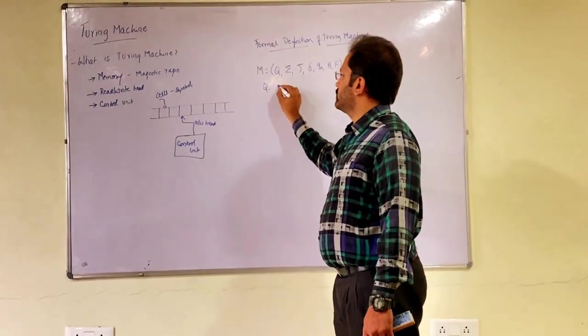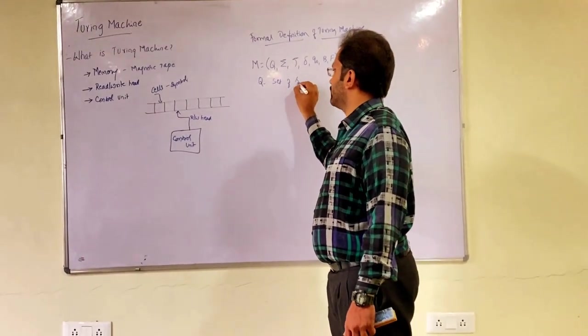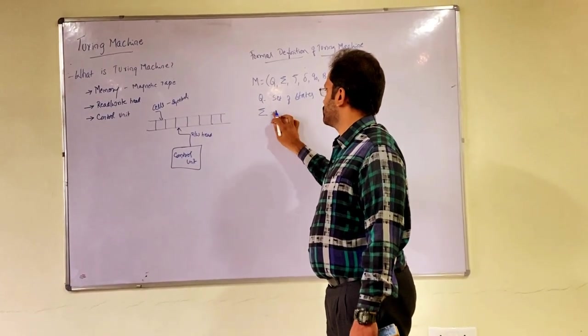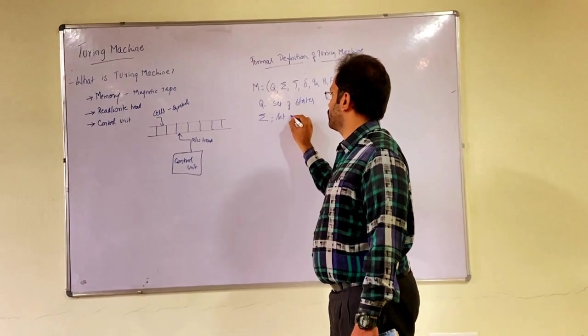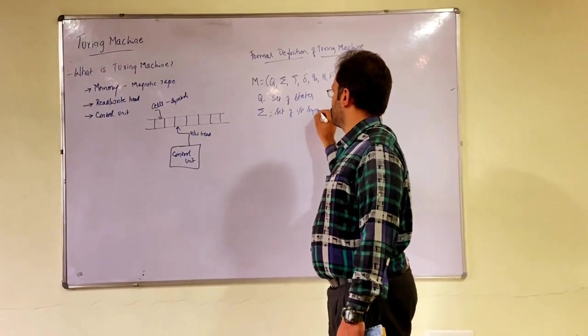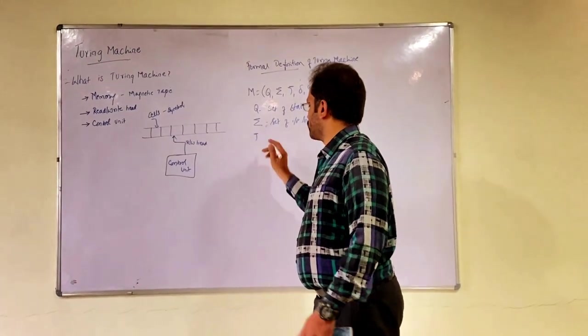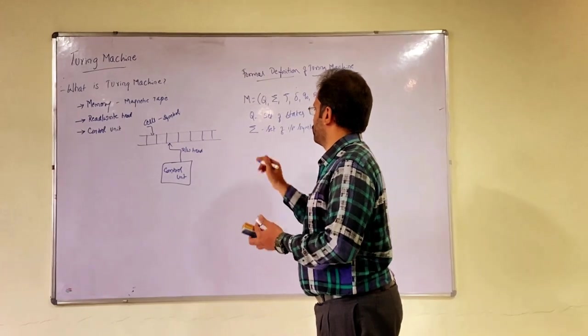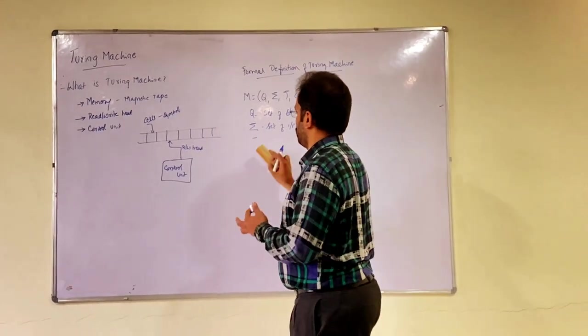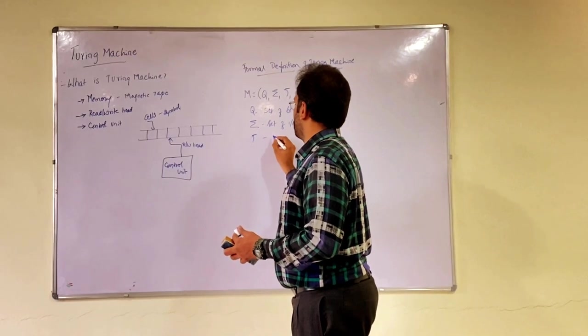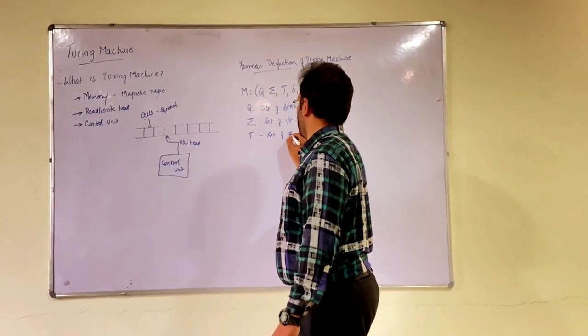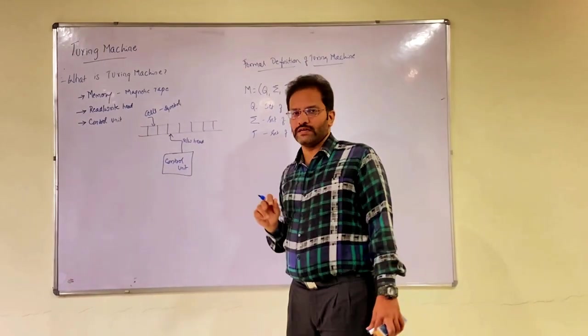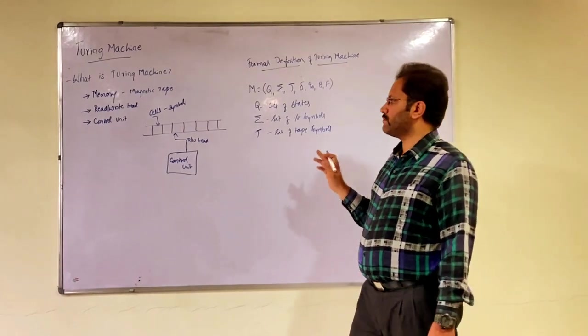Where Q is set of states, internal states, as similar to other automata. Sigma is set of input symbols, that's also known. Tau is set of tape symbols. Tau is, I have to use some symbols on the tape, those symbols are represented or denoted by Tau.